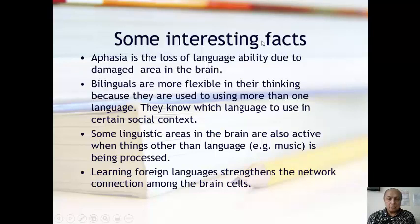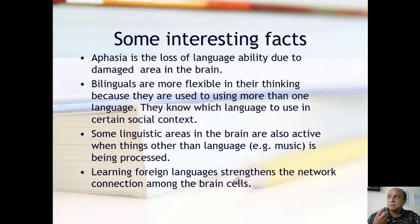There are some interesting facts about the brain as it relates to language. Aphasia is the loss of language ability due to a damaged area in the brain. If somebody's brain is damaged on the left side, then they will experience aphasia — all of a sudden, they cannot talk anymore.